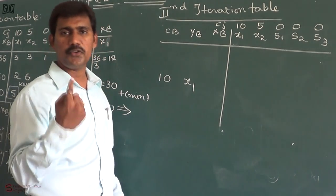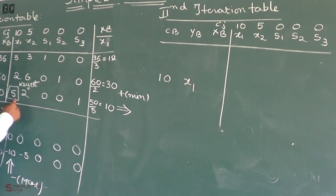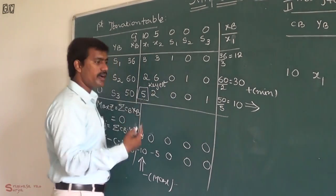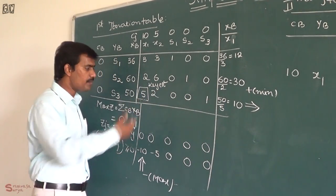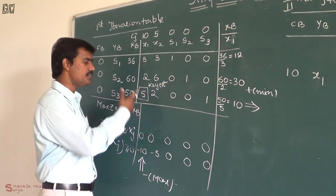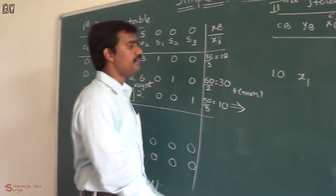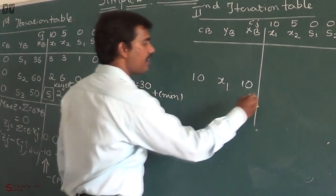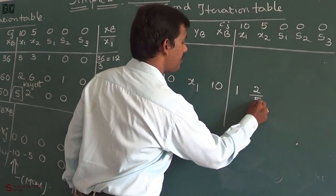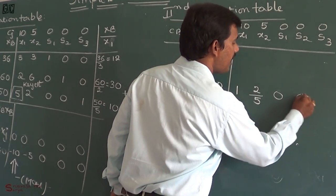We make the key element unity by dividing it by itself. The key element is 5, so we divide the entire third row by 5: 50/5 = 10, 5/5 = 1, 2/5, 0/5 = 0, 0/5 = 0, 1/5. So the new third row is [10, 1, 2/5, 0, 0, 1/5].